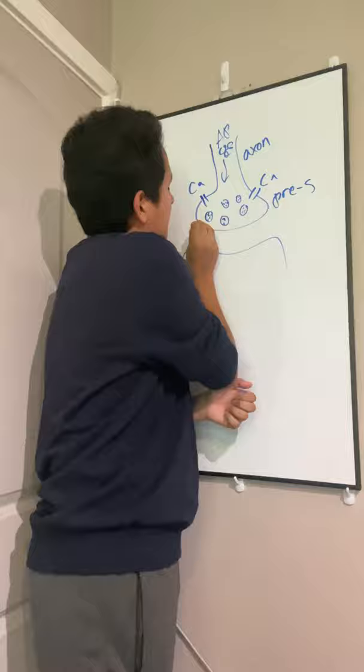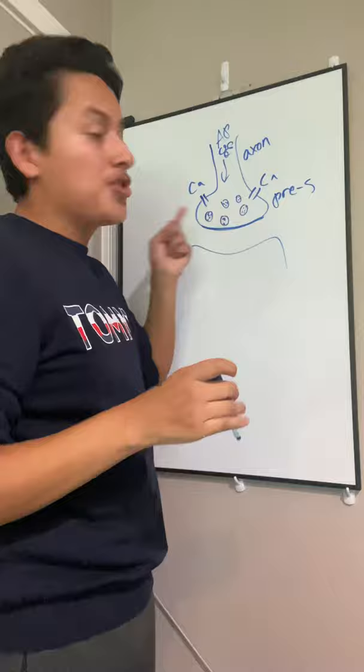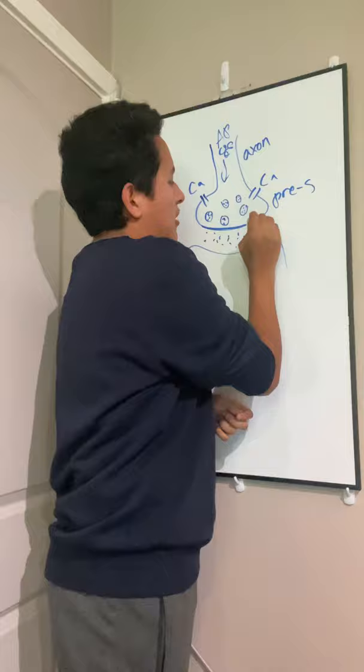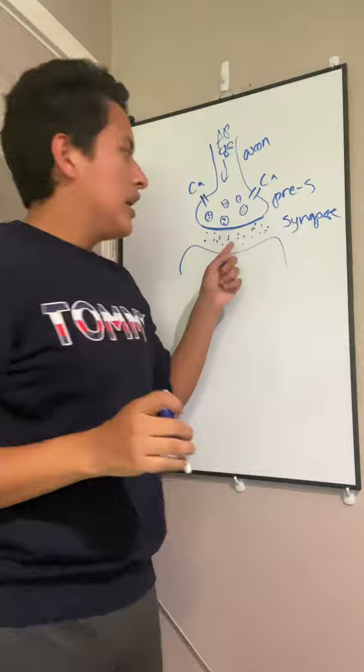They fuse with the membrane of the presynaptic terminal, and the neurotransmitters are released within the gap, which we call the synapse. Then step four: these neurotransmitters...